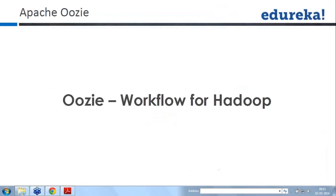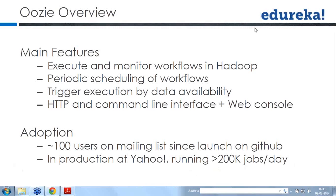Oozie is a workflow for Hadoop. The main advantage of Oozie is that you can execute and monitor your workflows in Hadoop. If you want to schedule something — for example, a JPMC use case where at 6 o'clock in the morning 10 million records from Sybase get copied into HDFS, then a MapReduce job runs on that — you would use some kind of scheduling algorithm, and that is what Oozie is in Hadoop. You can do periodic scheduling of workflows.